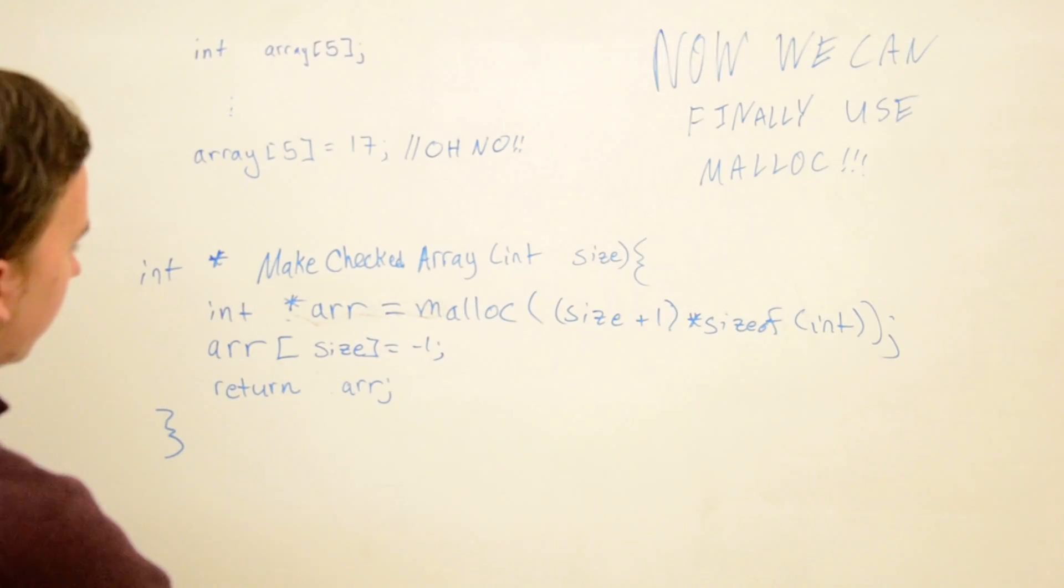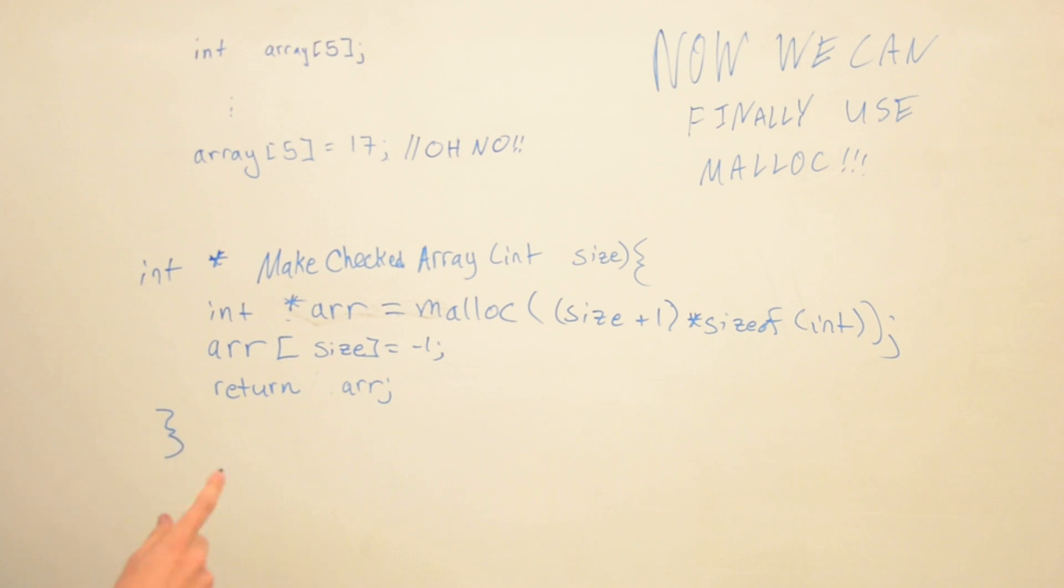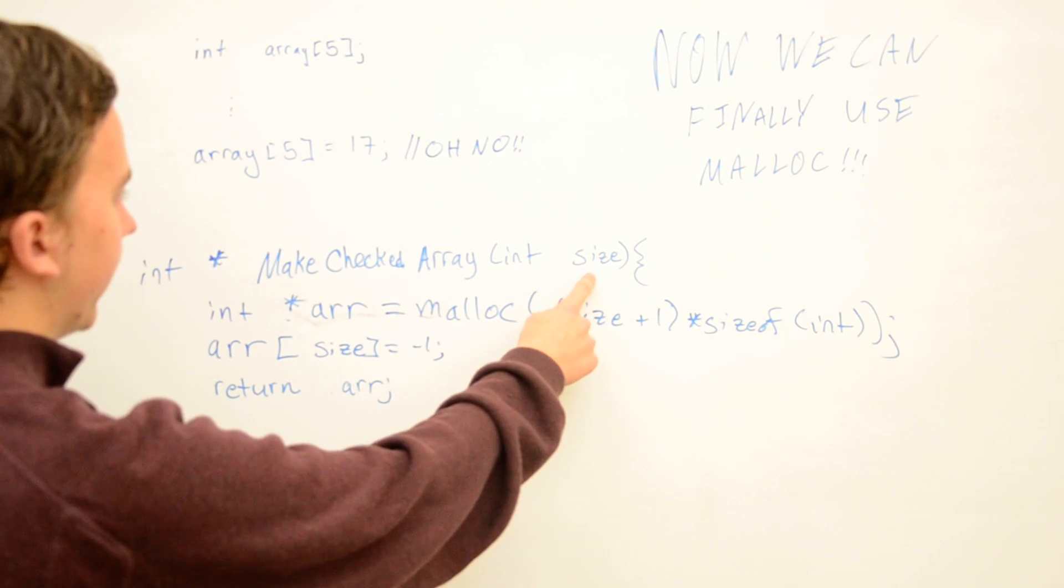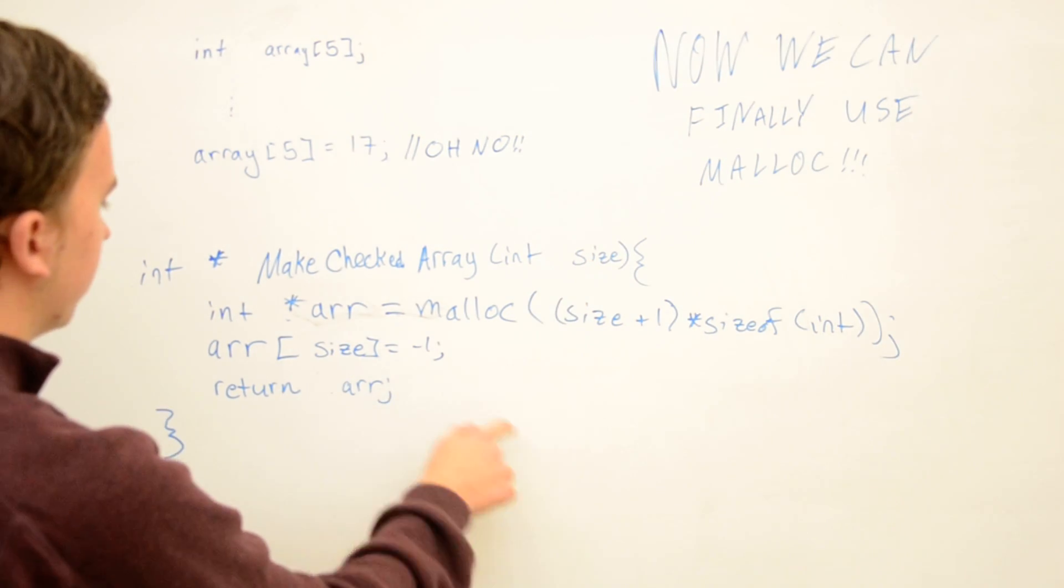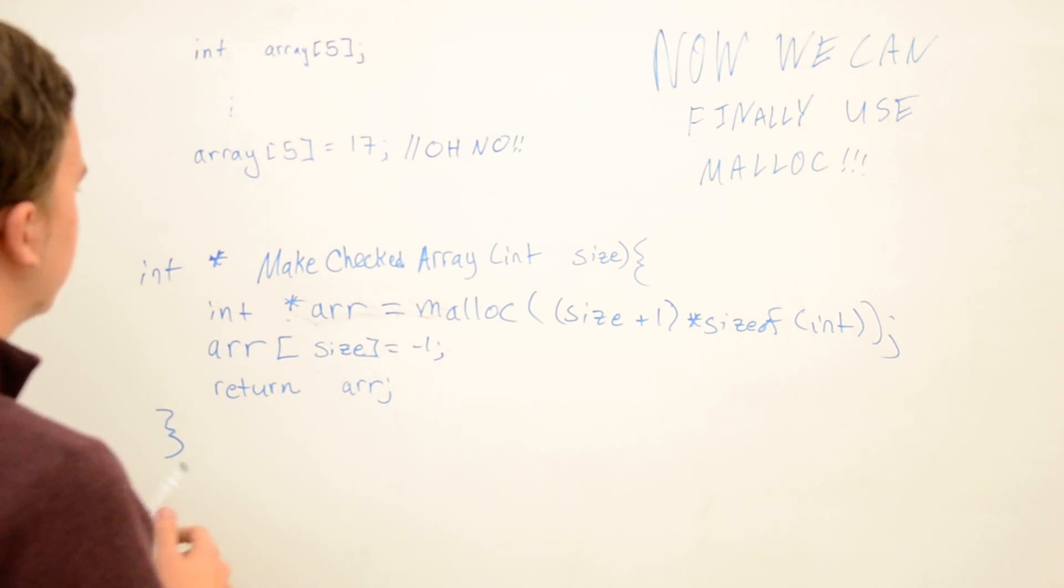Now if we want to check this, it's pretty simple. All we have to do is write a function to check the array by checking the array at the size of the array and make sure that it's not negative one. I won't write that function out because it's pretty straightforward.